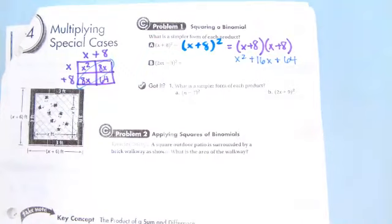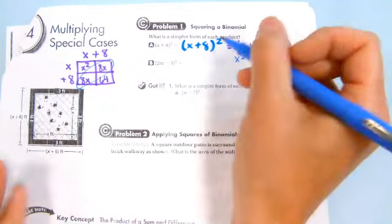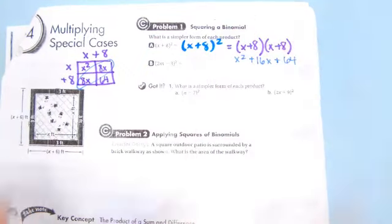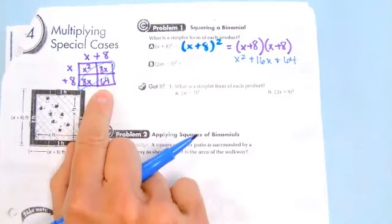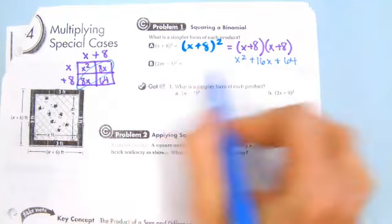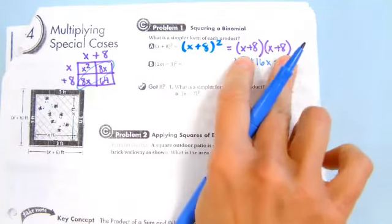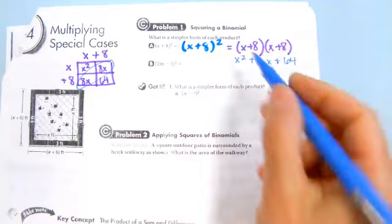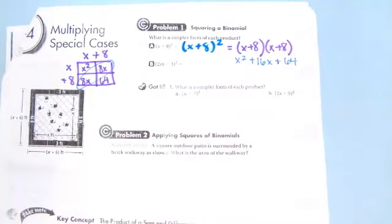If we were to just distribute the squared to both terms, then we would get the x squared and the 64. But what term would we miss? The 16x. With a binomial like this, you have to make sure that you realize it's times itself, the whole binomial, and there's that middle term that ends up coming out of that.